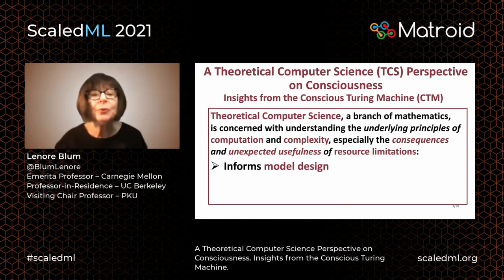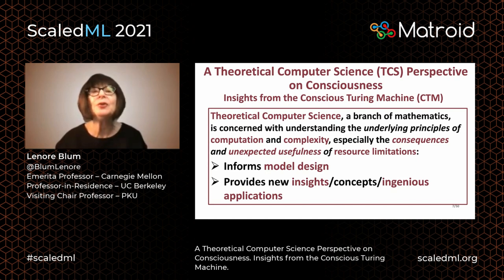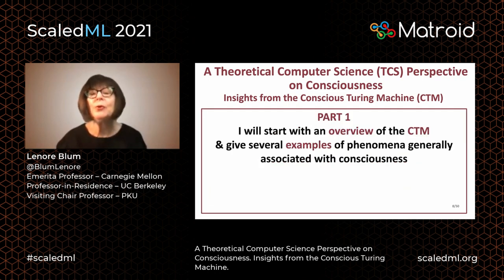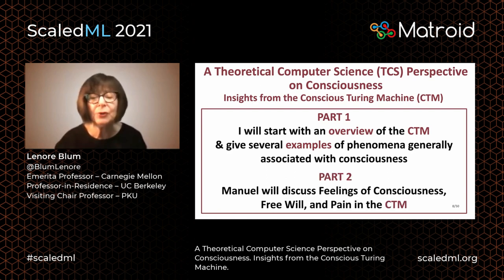It informs our model design and has provided new insights, concepts, and ingenious applications — for example, to the fast generation of pseudorandom number sequences, infeasibly distinguishable from truly random. I will start with an overview of the Conscious Turing Machine, the CTM, and give several examples of phenomena generally associated with consciousness. Manuel will then discuss feelings of consciousness, free will, and pain in the CTM.